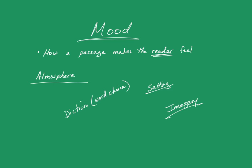The author will also use diction, or word choice, to communicate a mood. For instance, if the words all have positive connotations, then that feeling will transfer to the reader. If they all have negative feelings, then that feeling will transfer to the reader.